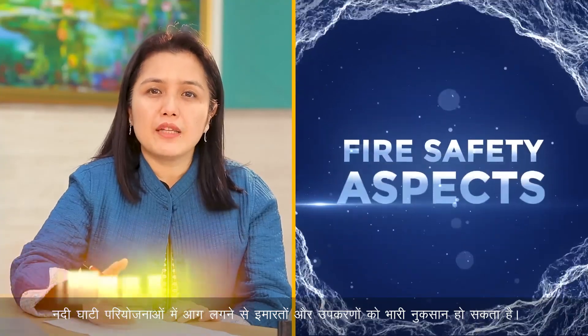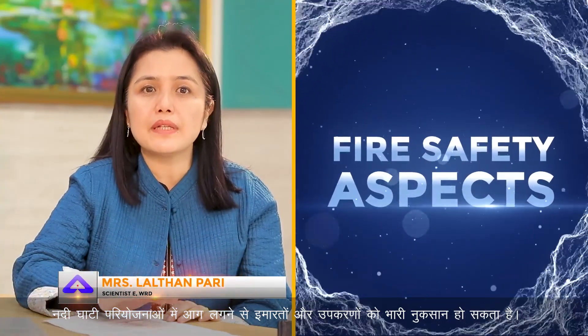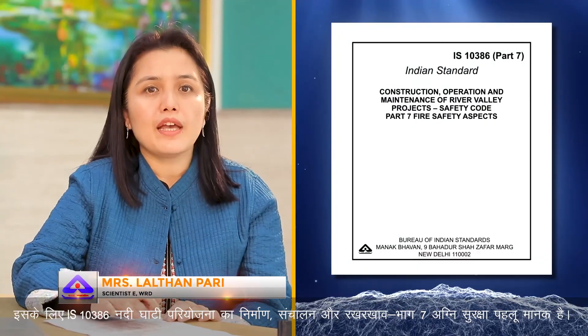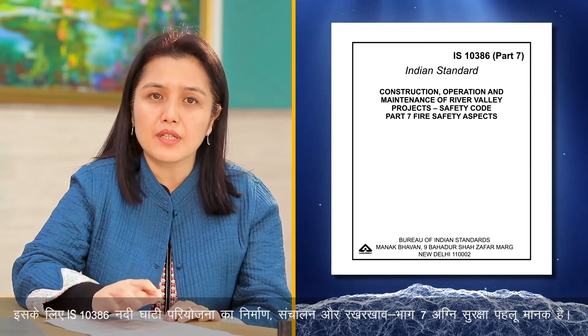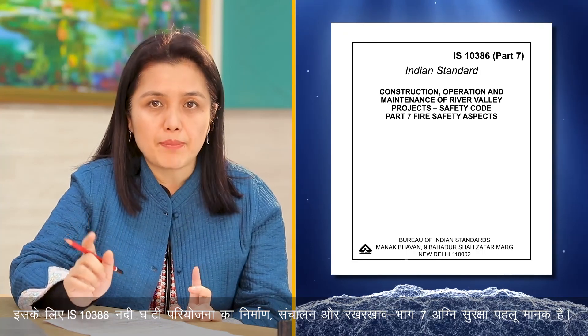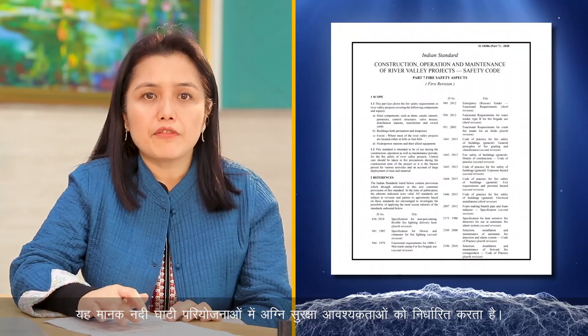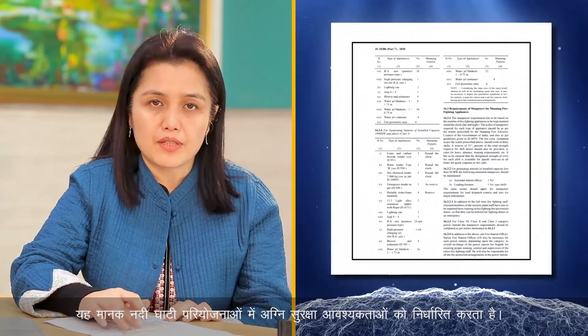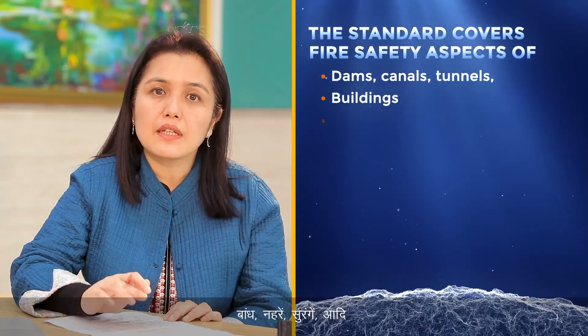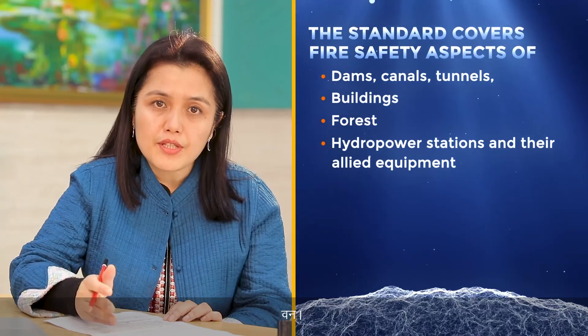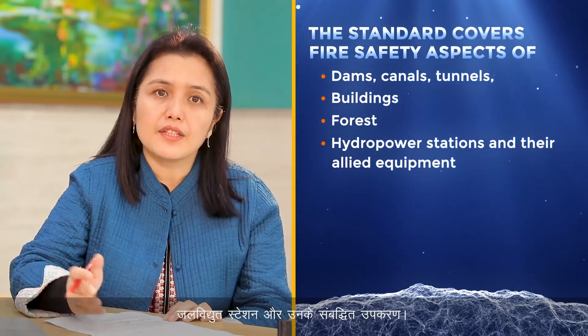Outbreak of fire in river valley projects can cause extensive damage to buildings and equipment. IS 10386, Construction, Operation and Maintenance of River Valley Projects — Part 7, Fire Safety Aspects — lays down fire safety requirements intended for use during construction, operation and maintenance periods. It covers fire safety aspects of dams, canals, tunnels, buildings, forests, hydropower stations and their allied equipment.